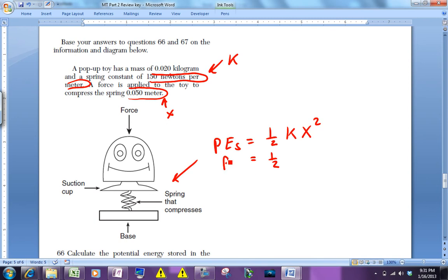You just plug in one-half. k is 150 newtons per meter. x is 0.05 meters.